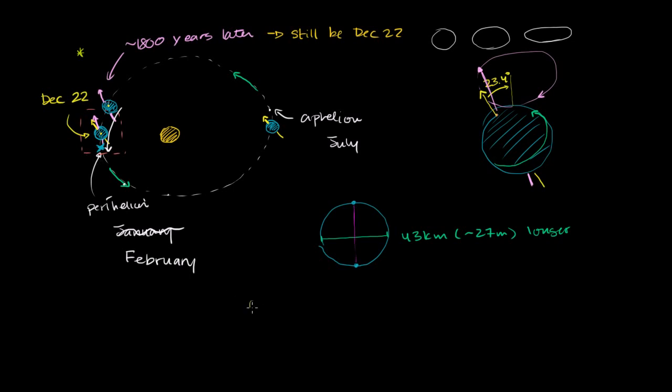So if I draw the sun again, and maybe right now our orbit looks something like this. And I'm going to exaggerate the eccentricity of it just so that the perihelion and the aphelion are a little bit clearer. So right now this is the perihelion, this is the aphelion. We do it in different colors.